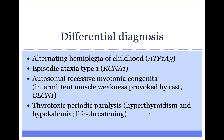The differential diagnosis for periodic paralysis syndromes is quite interesting, as many of these disorders have an association with an ion channel. Alternating hemiplegia of childhood presents with hemiplegia — paralysis of one side of the body — due to a variant in ATP1A3, which encodes a sodium-potassium ATPase pump. Episodic ataxia can be associated with episodes of weakness and ataxia, and is due to variants in a potassium channel. Autosomal recessive myotonia congenita can present with muscle weakness provoked by rest, and is due to variants in a chloride channel.